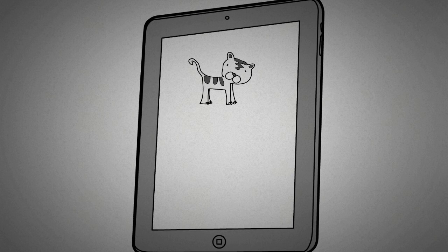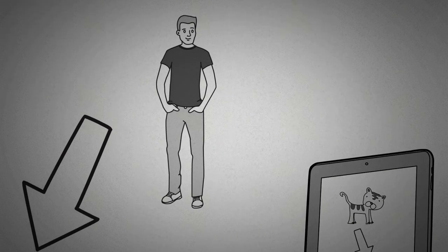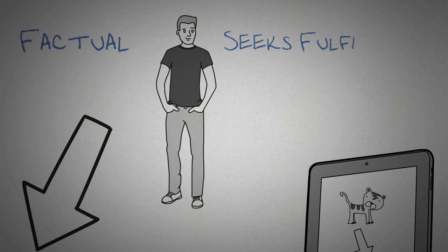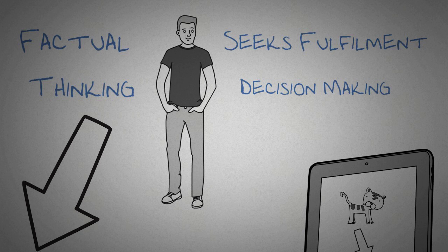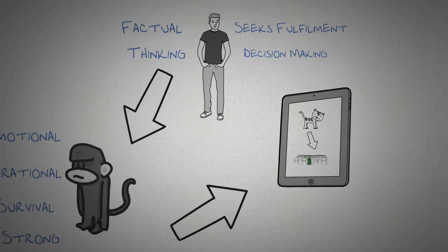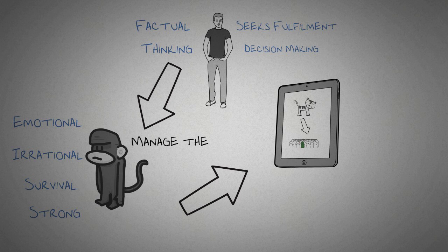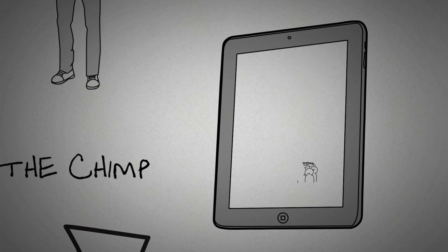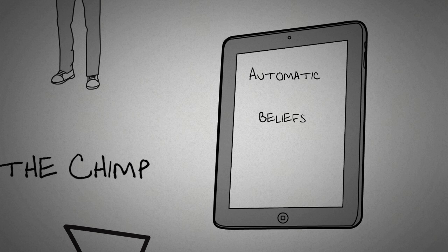Our human is us. It thinks logically with facts and wants to feel fulfilled. This is where conscious thought occurs and where we make our decisions. Our chimp and computer are so much more powerful than us, the human. It's pointless battling them with motivation or willpower. They need managing correctly and programming. Our computer is where automatic behaviors, beliefs, and values are stored. It's 20 times more powerful than us, so if there's conflict it needs to be reprogrammed.